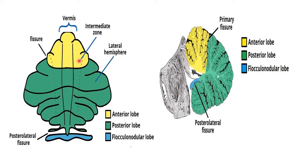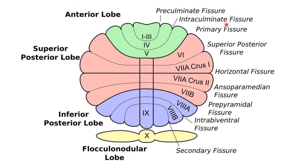You can see the lateral hemisphere, the intermediate zones, the posterolateral fissure, the anterior lobe, posterior lobe, and flocculonodular lobe. In the lateral view you can clearly see the primary fissure and the posterolateral fissure separating the middle lobe and flocculonodular lobe. There are also additional fissures: pre-culminate and intra-culminate for the anterior lobe, and superior posterior, paramedian, intra-biventral, and secondary fissures for the posterior lobes.